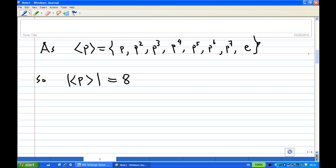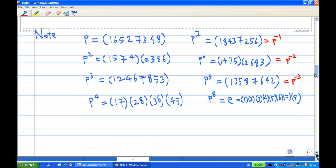Now what is actually P, P², P³, P⁴, and so on? We can check that if P = (1 6 5 2 7 3 4 8), then P² = P times P = (1 5 7 4)(2 3 8 6).